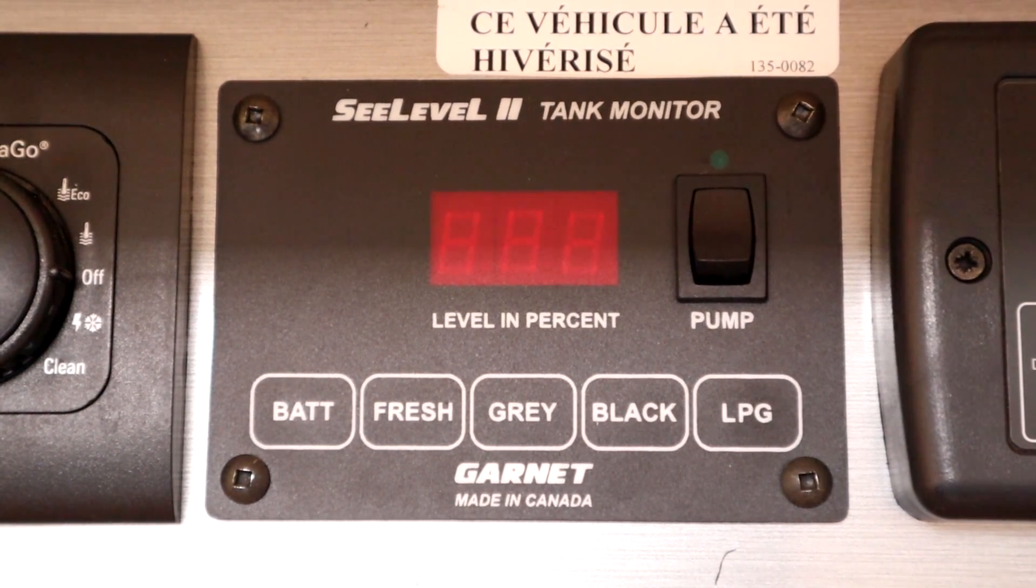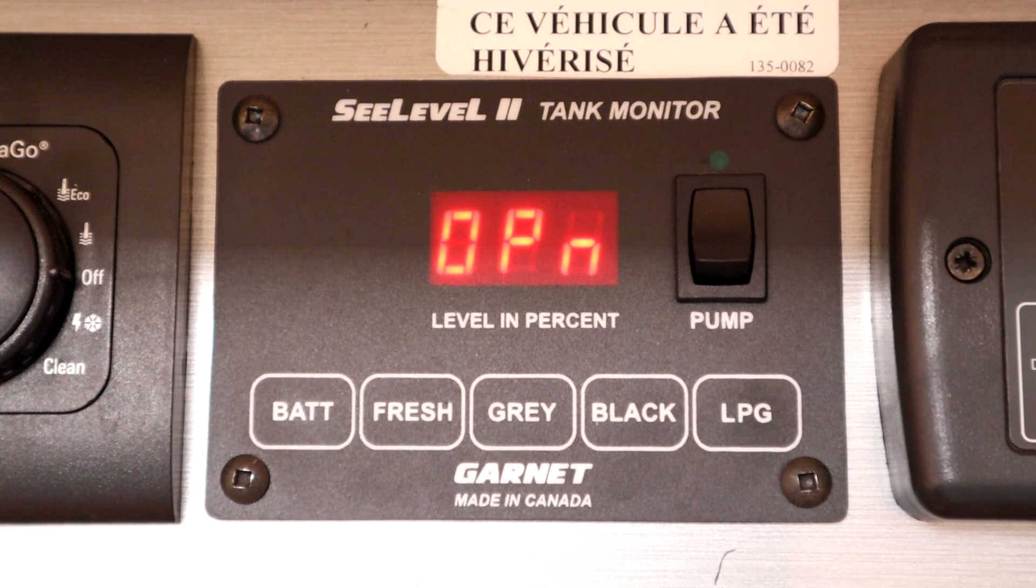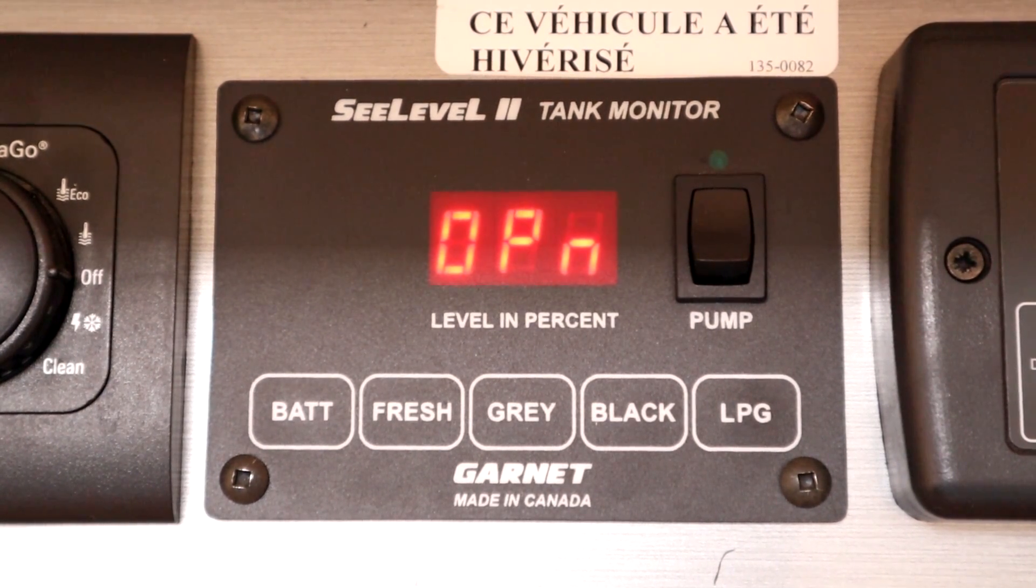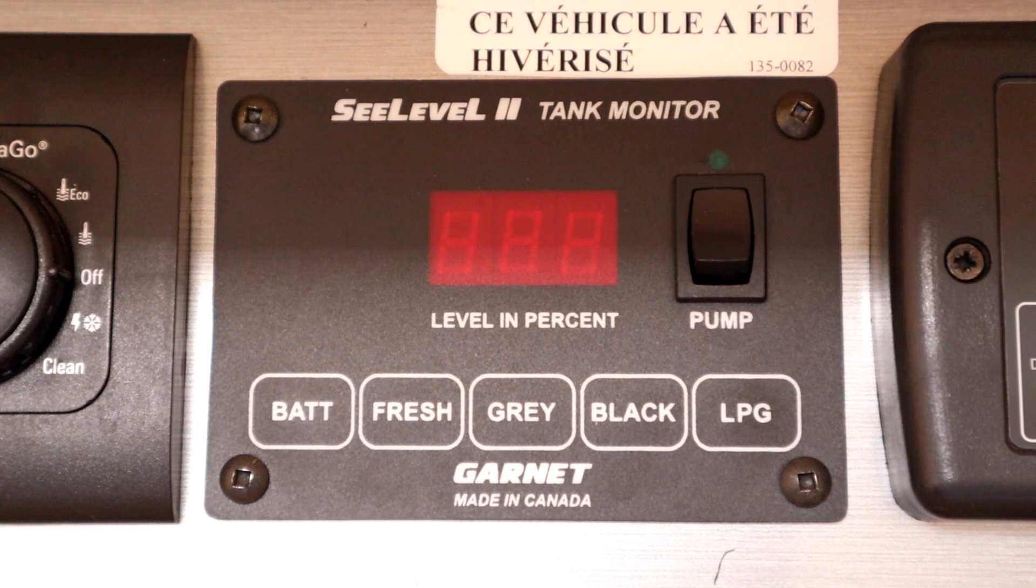So what do you do if when you go to read the level on your propane tank, you get a message like this which indicates an open circuit, or perhaps you get a short circuit message? In this video, I'm going to show you how to troubleshoot the problem. And if it turns out that the propane sensor itself is defective and needs to be replaced, I'm going to show you how to verify that.